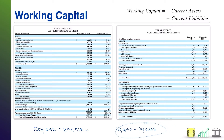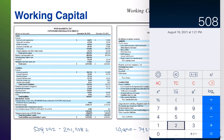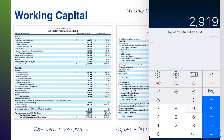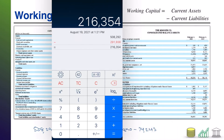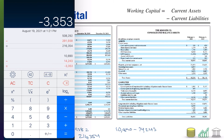I'm going to pull out my calculator and we'll do a little math on this. Let's do Weiss first: 508,292 minus 291,938 gives us working capital of 216,354. If we do Kroger next, we've got 10,890 minus 14,243, or a negative 3,353.